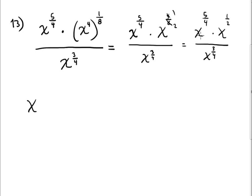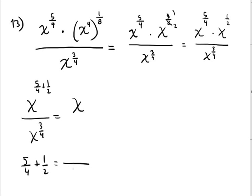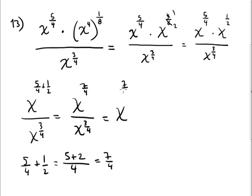When you multiply, you add the exponents: 5/4 plus 1/2. The LCD is 4, so that's 5 plus 2 equals 7 over 4. We have x to the 7/4 over x to the 3/4. Division means subtraction of exponents: 7/4 minus 3/4. Same denominator — 7 minus 3 is 4, so 4 over 4 equals 1. An exponent of 1 is invisible, so the answer is just x.